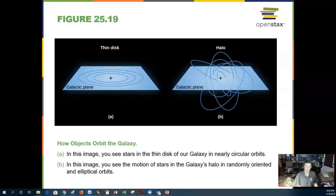How objects orbit the galaxy: In the thin disk, they go around in a flat plane. In the halo, they go above and below the galactic plane of the disk of the galaxy.